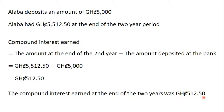When we calculated simple interest, we had five hundred Ghana cedis. But for compound interest, we have five hundred and twelve Ghana cedis fifty pesewas. The reason is that for simple interest, the principal remains constant throughout the two-year period. But for compound interest, the principal keeps increasing. So the compound interest at the end of the two-year period will be higher than the simple interest.